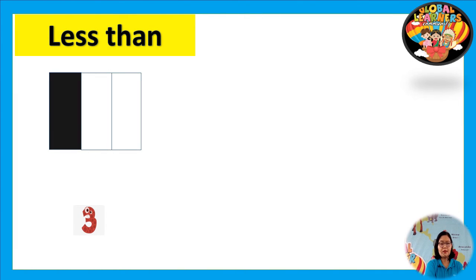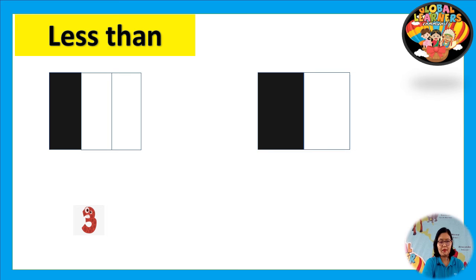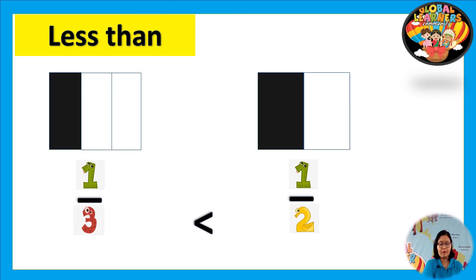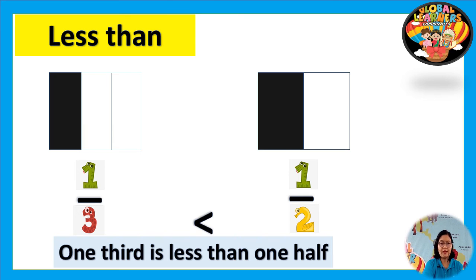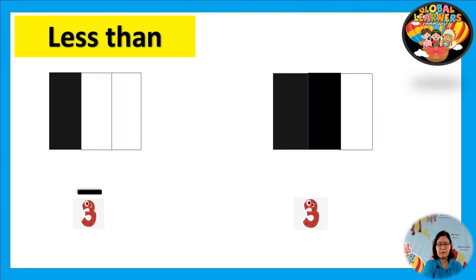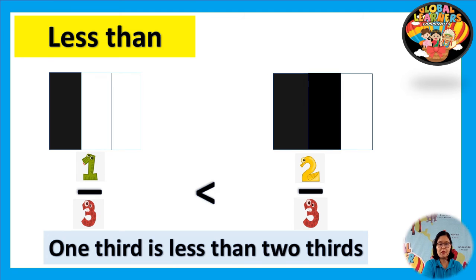The next step we will learn about less than. At the left side we have one third and at the right side we have one half. One third is less than one half. Now we have one third and two thirds — one third is less than two thirds.